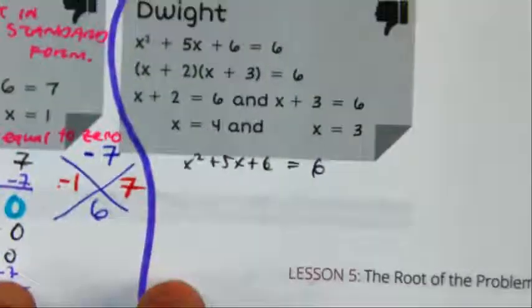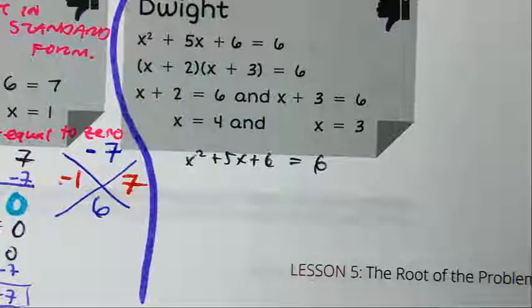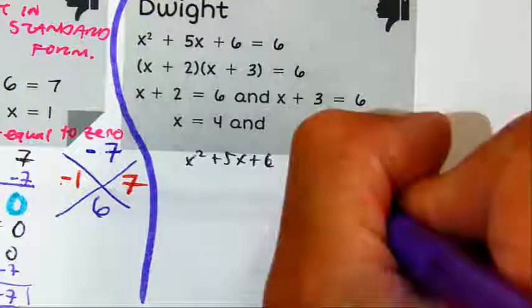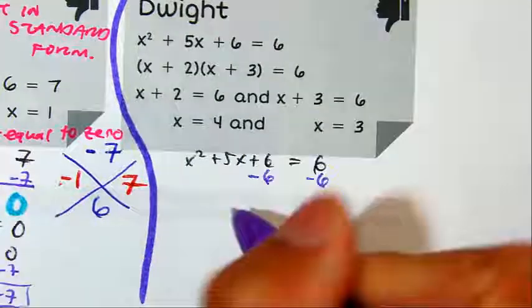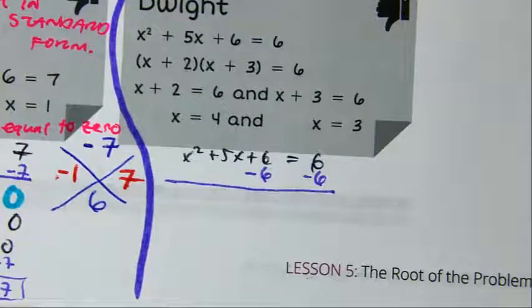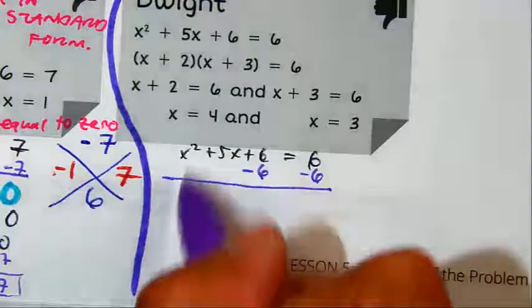You have to set 6. Yes, we are subtracting 6 to set it equal to 0. Angie, what do you get underneath this purple? 0. Down here, what do you write? X².